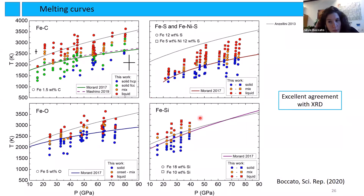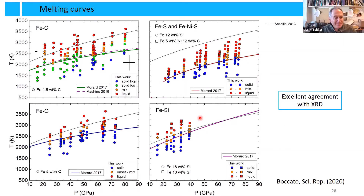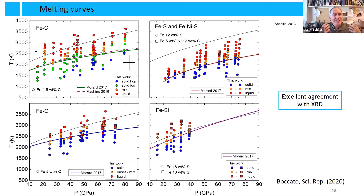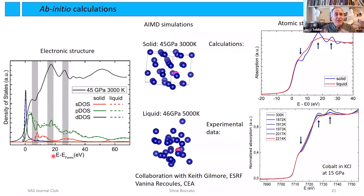That concludes the first part. A question: regarding the AIMD simulations and FEFF calculations, have you applied machine learning methods to look for clustering or hidden correlations between structural features and spectral features?